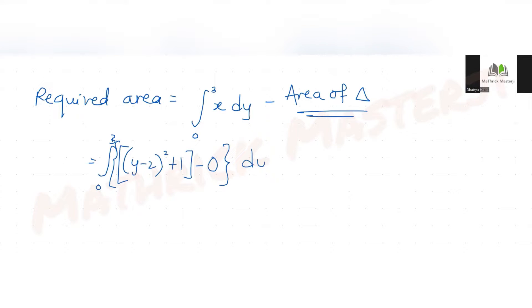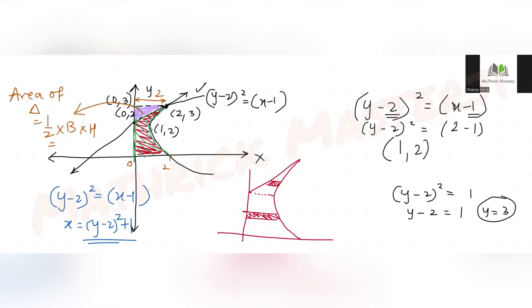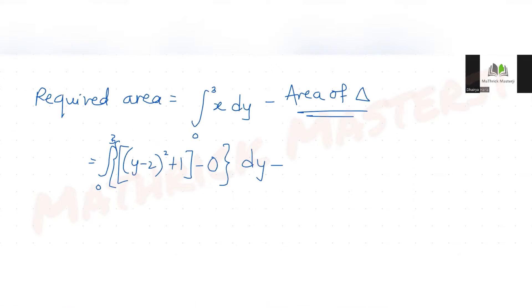We also need the area of the triangle to subtract. The triangle has base along the x-axis from 0 to 2 (base = 2 units) and height along the y-direction from 2 to 3 (height = 1 unit). Area of triangle = (1/2) × base × height = (1/2) × 2 × 1 = 1 square unit.